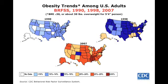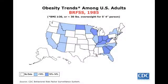As you can see in this chart, the obesity trends among U.S. adults from 1990 through 2007 has grown significantly. These are the obesity rates according to the BRFSS in 1985. You can see only a handful of states had a prevalence score between 10% and 14%.